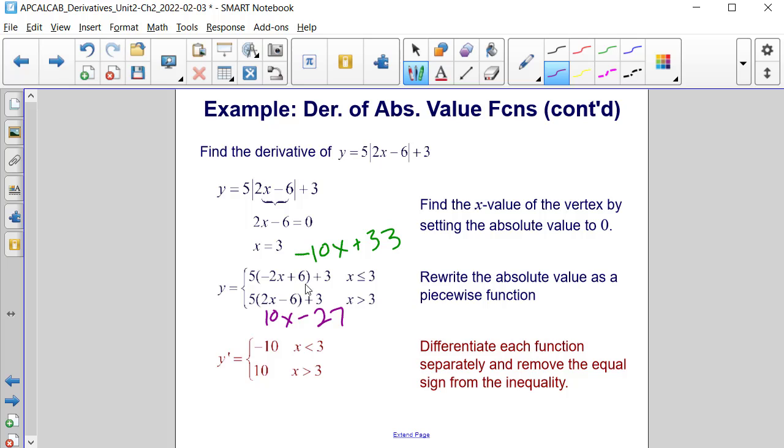So if we differentiate both of these with respect to x, we would get negative 10 and positive 10. And the negative 10 is only true now for x values being less than 3. Remember, we removed that equal to sign because at that vertex, it is not differentiable.